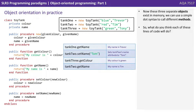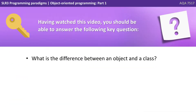There's the answer — hopefully you got those right. You can see we provide the name of the actual instantiated object, so tank one, tank two, tank three. Then we use a dot followed by the name of the method, and that accesses the particular method from that object — that version of the class that we instantiated. Having watched this video, you should be able to answer the following key question: what is the difference between an object and a class?